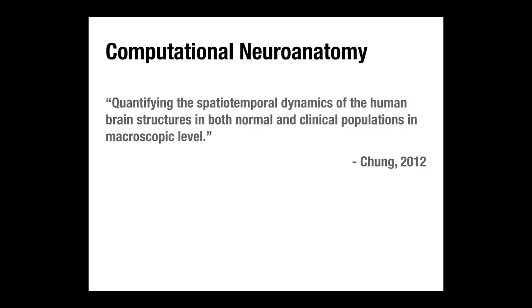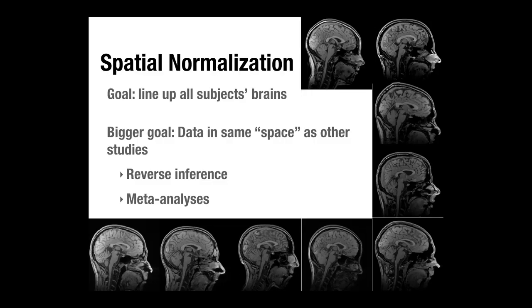Computational neuroanatomy methods quantify the spatial and temporal dynamics of human brain structures in both normal and clinical populations at the macroscopic level. Rather than just overall volume, we can look at how to quantify changes in the shape of complex 3D volumes — mathematicians have thought about this. All these methods rely on spatial normalization: lining up brains across individuals. Individual brains are very different in size and shape, and even in their sulcal and gyral anatomy there's substantial individual variability.